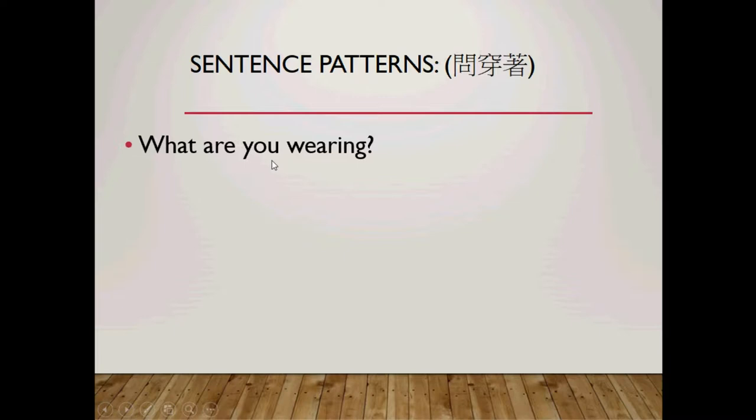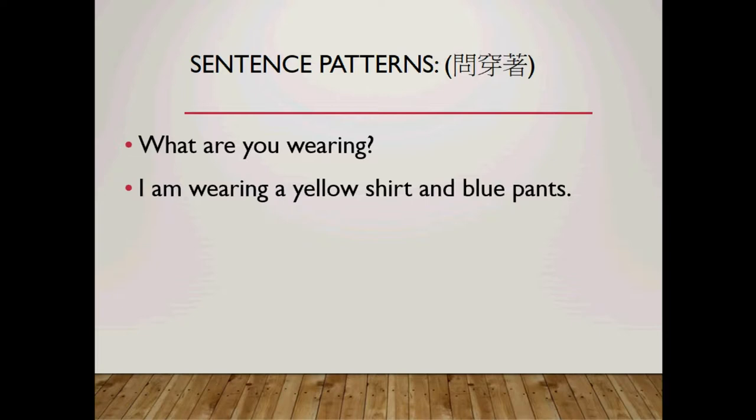You get the idea. Now in reply: I'm wearing a yellow shirt and blue pants. Shirt is countable — there's only one, so 'a yellow shirt.' As for pants, plural — no need for 'a.' So: I'm wearing a yellow shirt and blue pants. Again, he is wearing, she is wearing, we are wearing — you get the idea.